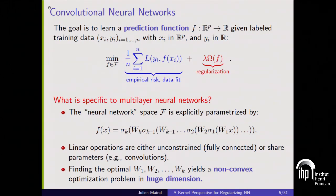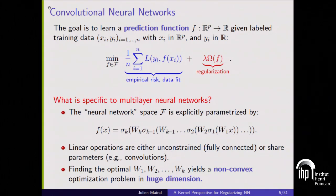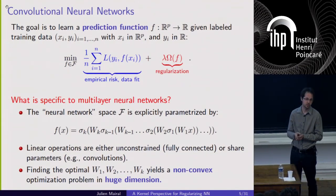What is specific is that prediction functions are explicitly parametrized such that if x is an input data represented as a vector, f of x is simply a sequence of operations — linear operations represented by matrices w1 to wk — interleaved with simple nonlinear functions sigma. In deep neural networks, most people use rectified linear units, which simply discard zero values in an input vector, so it's a pointwise operation.